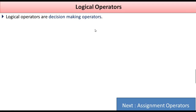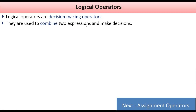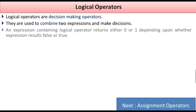What are logical operators? The logical operators are the same as decision-making operators. They evaluate expressions that result in true or false. They are used to combine two expressions and make decisions. An expression containing logical operators returns either 0 or 1 depending upon whether the expression result is false or true.